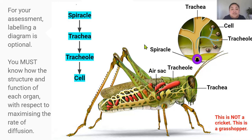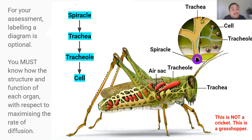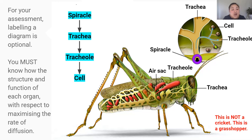Spiracles are pores on the exoskeleton — the outside skin or shell of the cricket. Spiracles can open or close to control ventilation or airflow into the tracheal system. Spiracles are directly connected to the relatively large tubes called the tracheae. Insects have a network of these tracheae, which then branch off into many tracheoles that further branch into narrower and narrower tracheoles. These tracheoles extend to every cell or every tissue of the body.